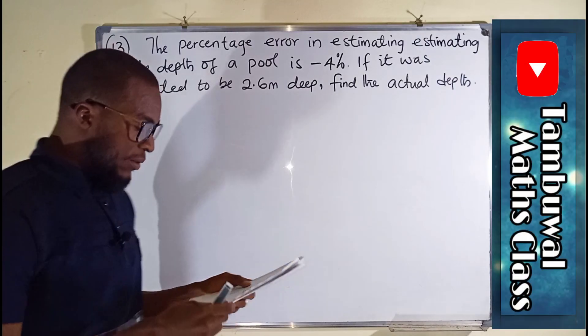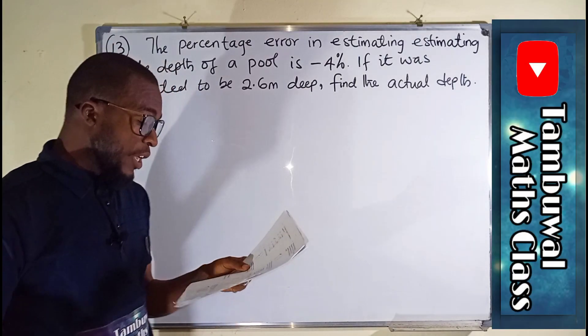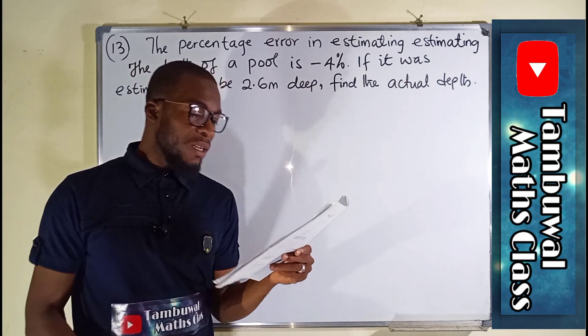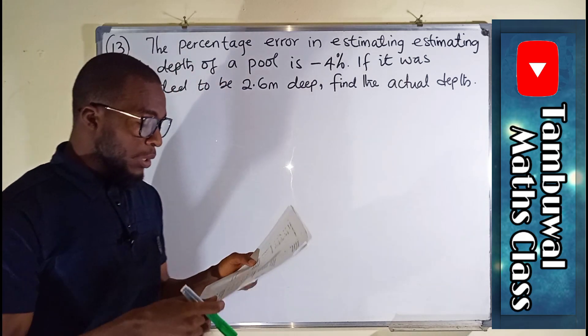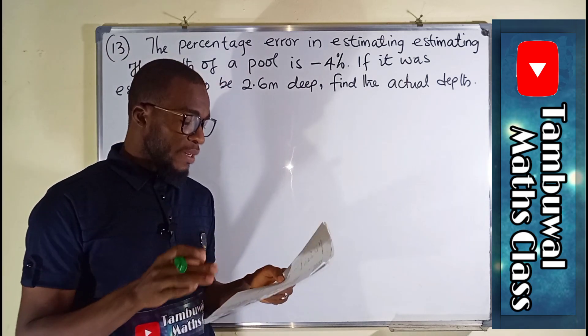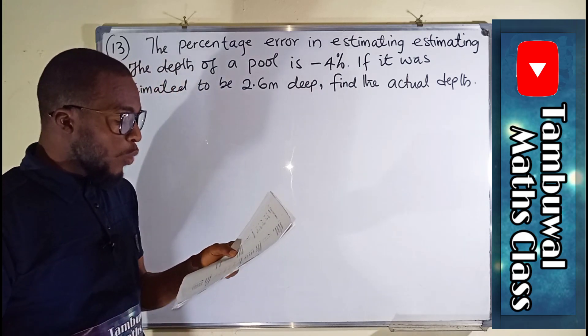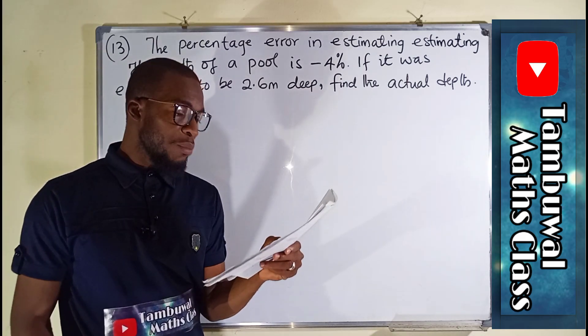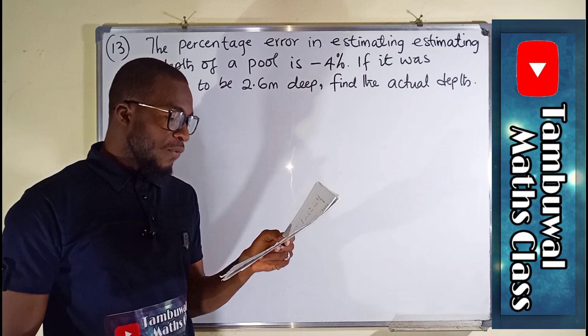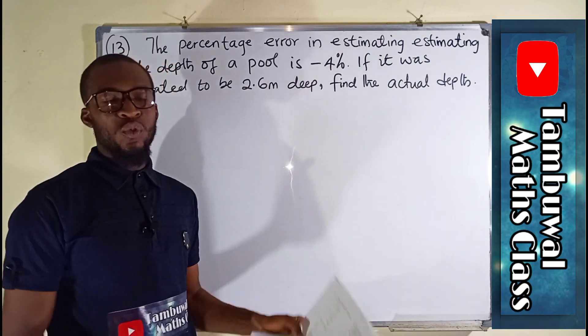So question 13 says, the percentage error in estimating the depth of a swimming pool is minus 4%. If it was estimated to be 2.6 meters deep, find the actual depth of the swimming pool.